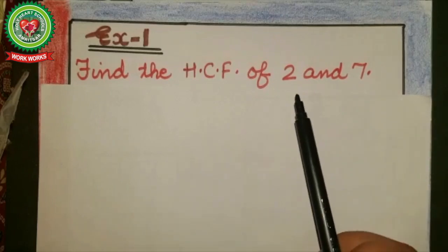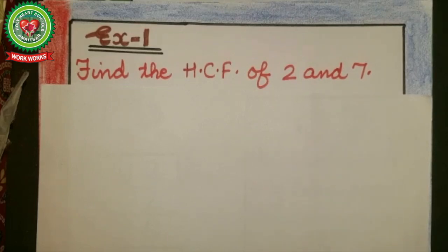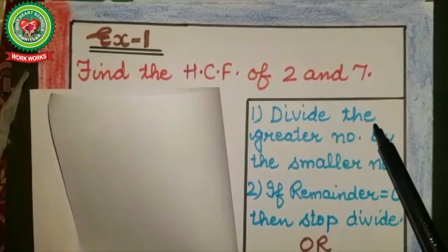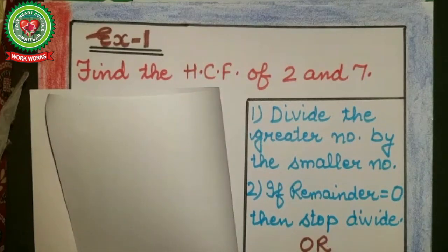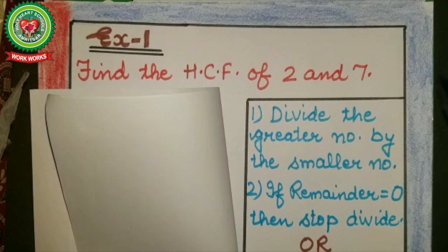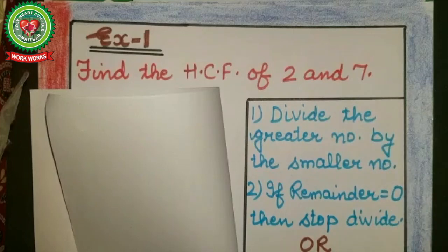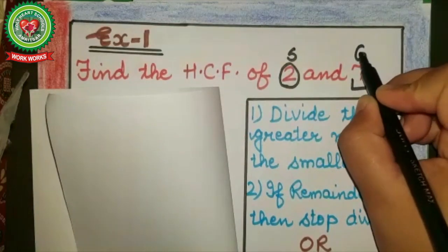Example number one: find the HCF of 2 and 7. To find the HCF of two numbers, we follow some steps. Step number one: divide the greater number by the smaller number. Now, between 2 and 7, which is greater? 2 is smaller and 7 is greater.